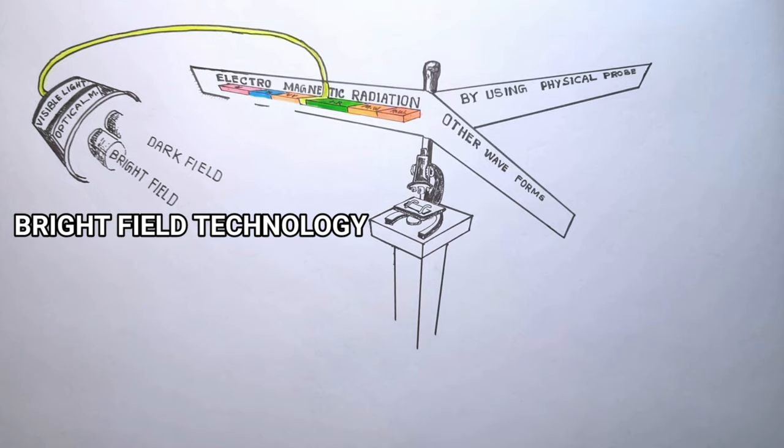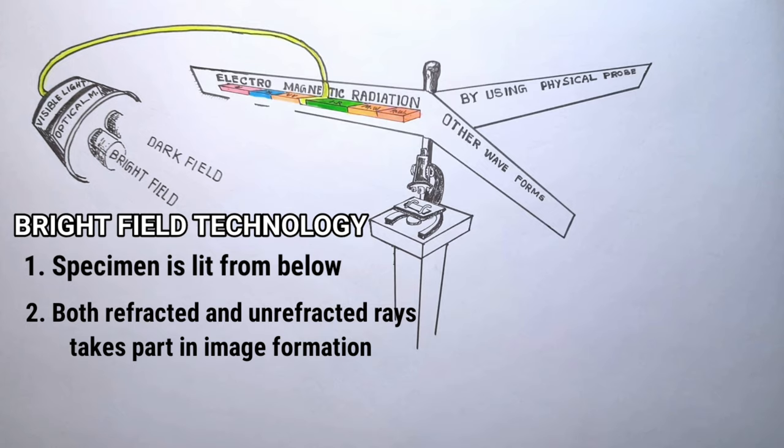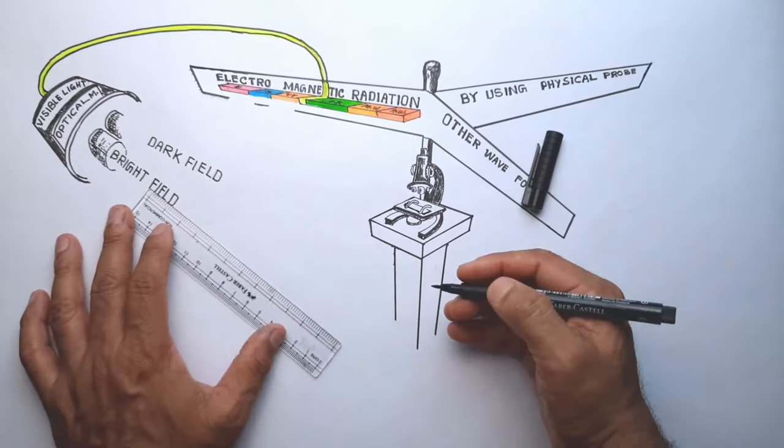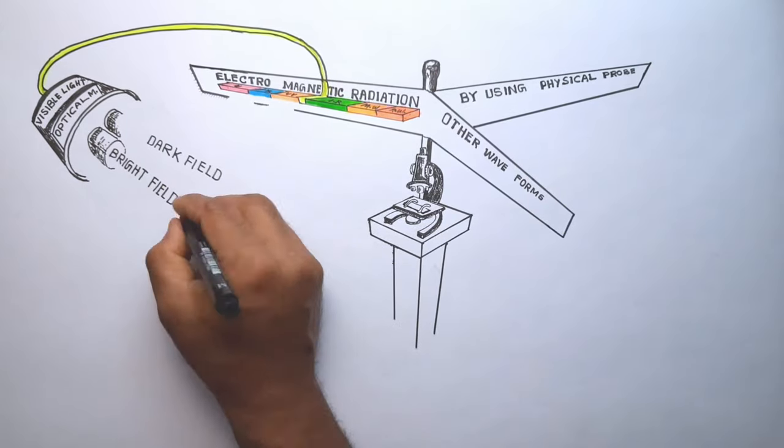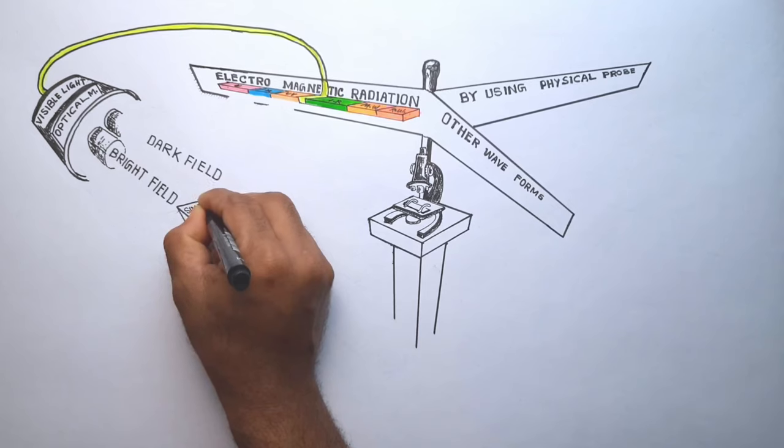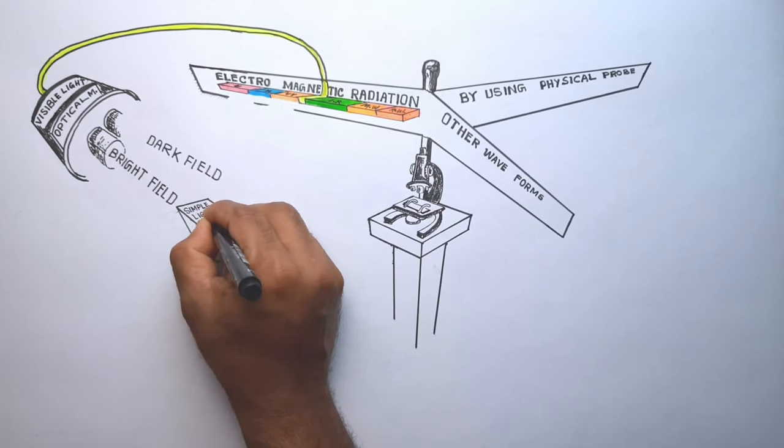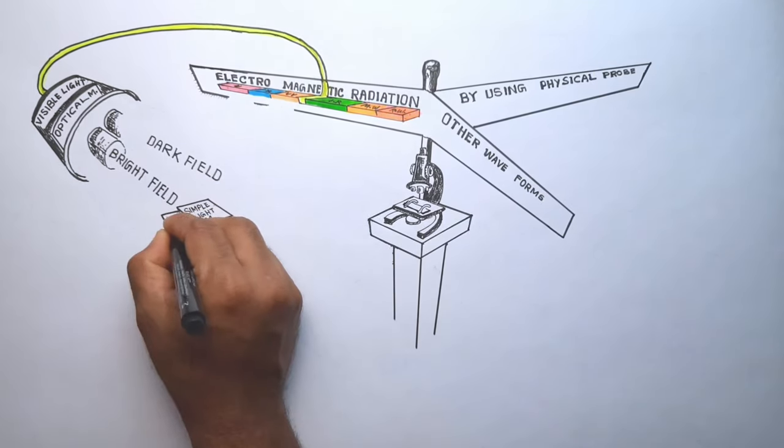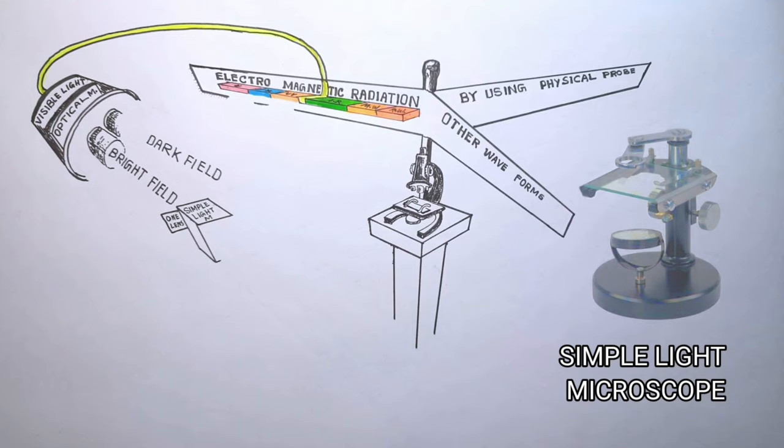Bright field is the conventional technique where specimen is lit from below and refracted as well as unrefracted rays from the sample will take part in image formation resulting in the formation of a dark image of the specimen. There are several types of bright field optical microscopes and we may group them all under five categories. The first one is the simple light microscope.